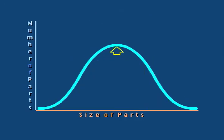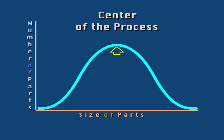The first characteristic is the location of the center of the curve, which indicates the center of the process. This is the average of the measurements taken. The process should be centered at or very near the nominal dimension specified in the part print.